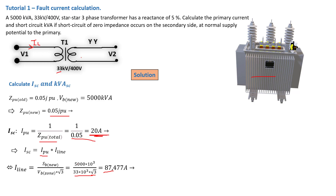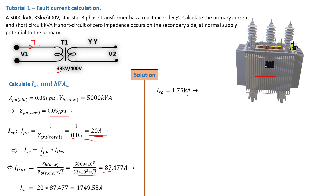We now have both the line current and the per-unit current. Replacing the values: I_sc = 20 × 87.477 = 1,749.55 A. Therefore, the short circuit current is equal to 1.75 kA.